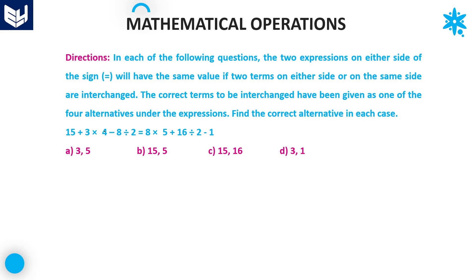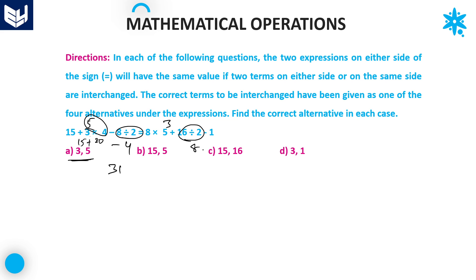Next question: option A says 3 and 5 should be interchanged. If 3 and 5 are interchanged, this becomes 5 where 3 was. First priority: division gives 4. Then multiplication: 5 into 4 is 20. 15 plus 20 minus 4 equals 31. For the right hand side: division gives 8, then multiplication: 8 into 3 is 24. 24 plus 8 minus 8 is 24, then 32 minus 1 equals 31. Both sides equal 31, therefore option A is the right answer.